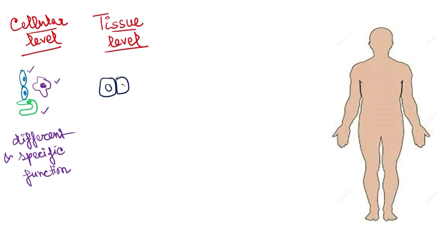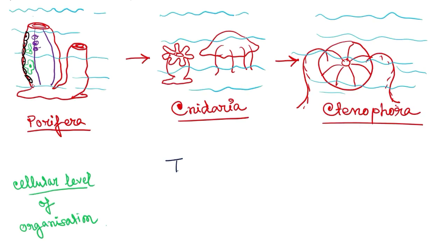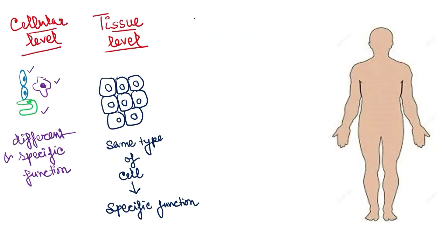The next level of organization is the tissue level. In this case, similarly structured cells come together to perform a particular function. These are the same types of cells doing a specific function, forming a tissue. The tissue level of organization is found in Cnidaria and Ctenophora.